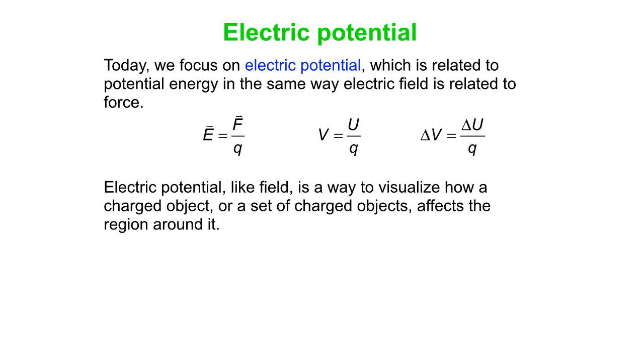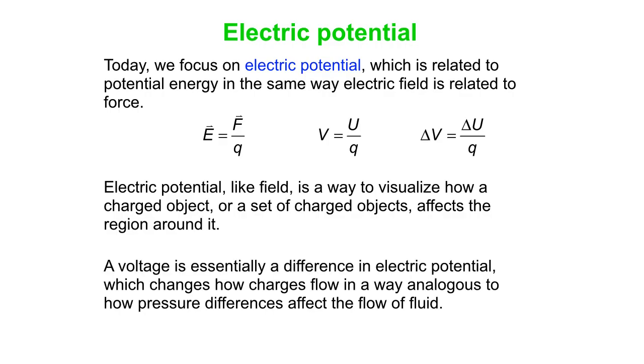You can also say that the change in potential is the change in potential energy per unit charge. Our invention of potential and field gives us a way to visualize how a charged object or a set of objects affects the region around it. You might hear the word voltage, and voltage is essentially a difference in electric potential. That changes how charges flow in a way analogous to how pressure differences affect the flow of fluid. You want a fluid to flow? Make a pressure difference. You want charge to flow? Have a potential difference.